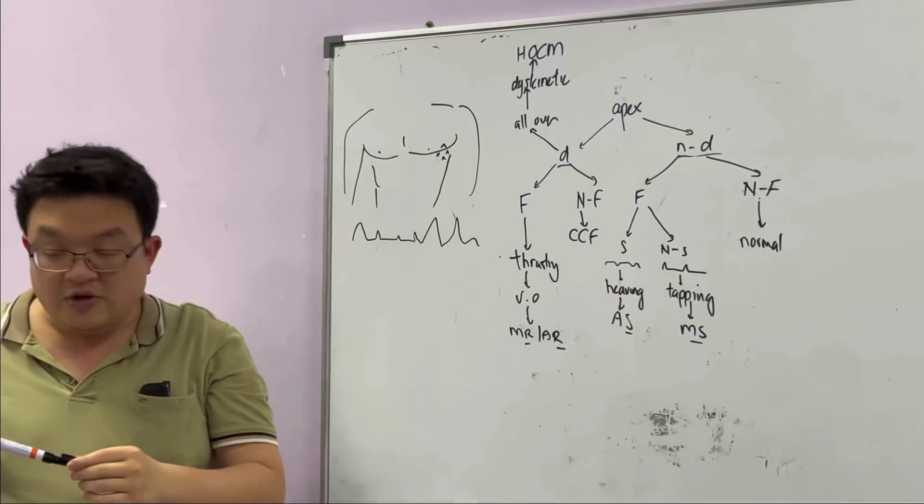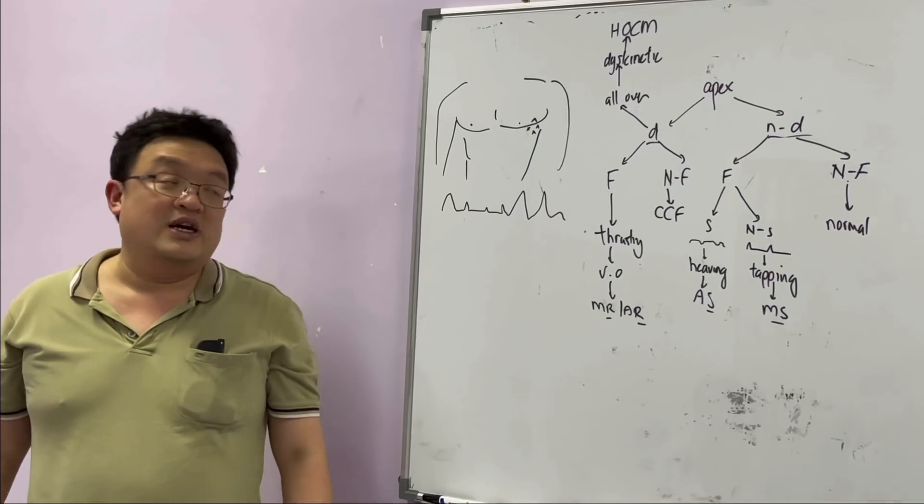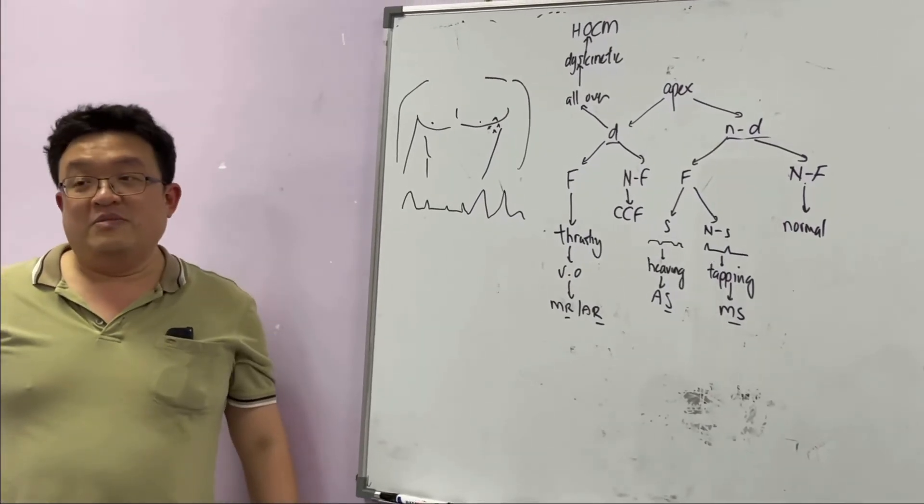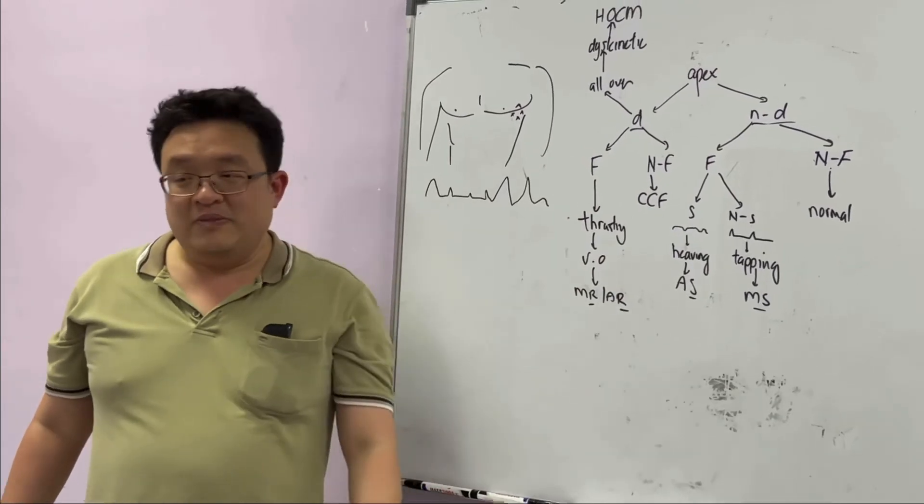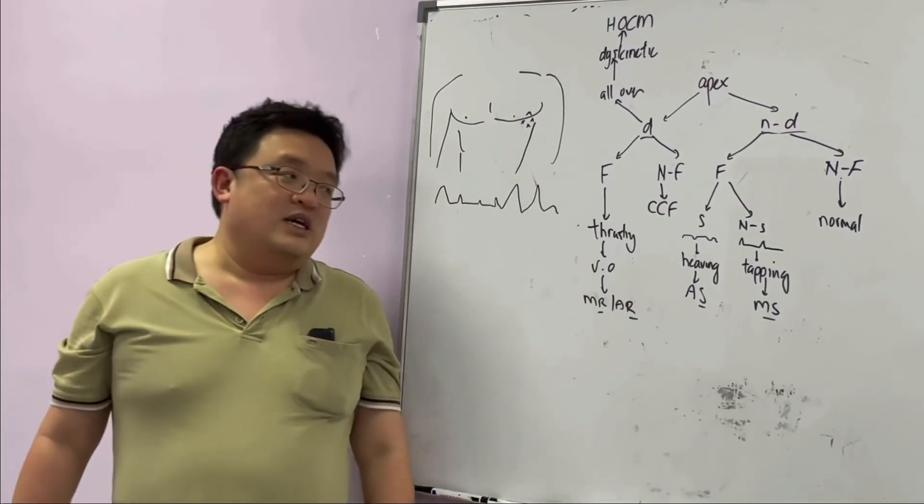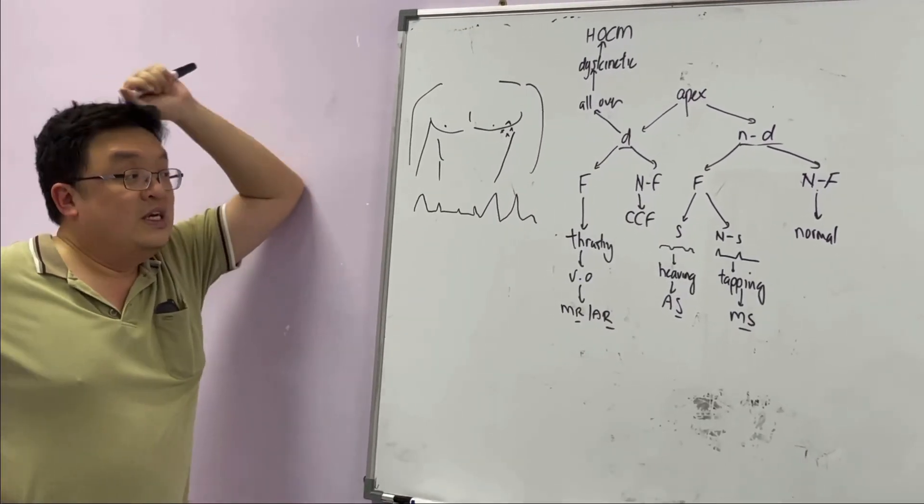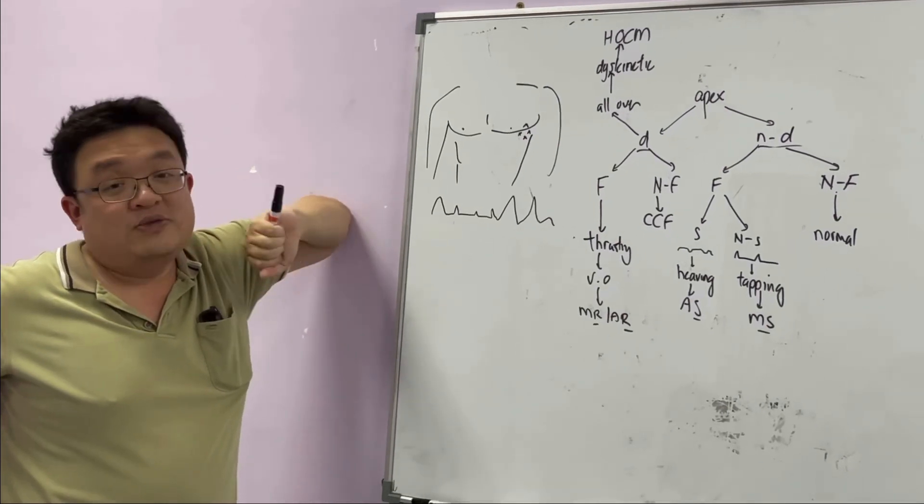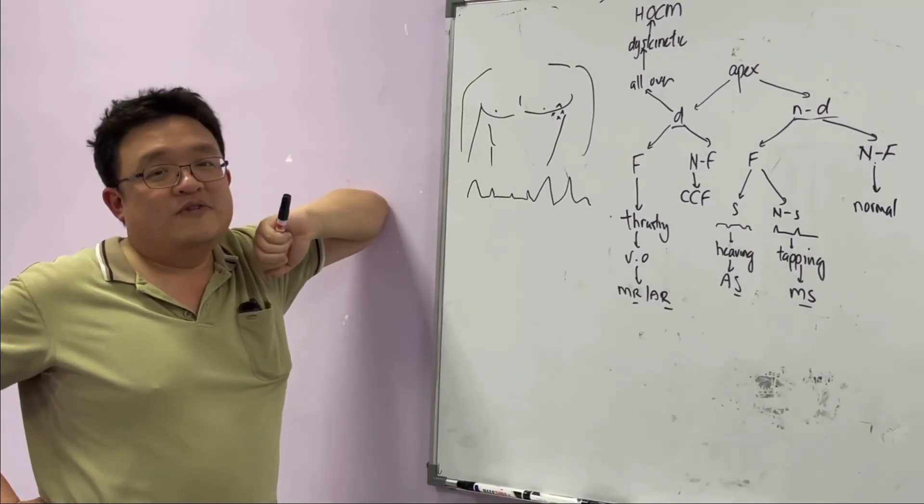Again, there's also dyskinetic HOCM, but nowadays it's very rare to see because the moment you detect HOCM, it's negligent if you don't do something about it because you have sudden cardiac death. But on and off, you still find a person with HOCM. Nowadays, when we detect HOCM, we're going to do putting in a pacemaker or defibrillator or something like that to prevent sudden cardiac deaths. So this is all the questions you're dealing with the apex. Okay, then finish with apex.